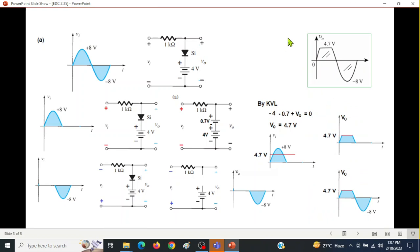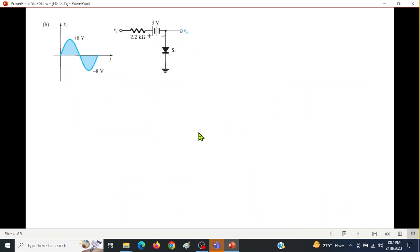Okay, now we come to the part B. Part B will follow the same technique. We're applying the positive half, so positive here, negative here. This positive making the diode forward biased.